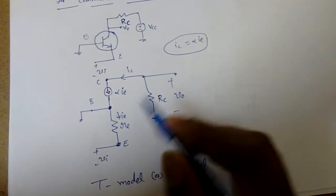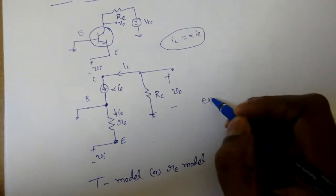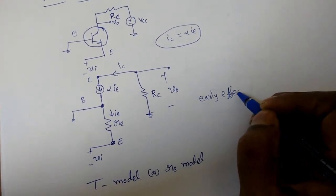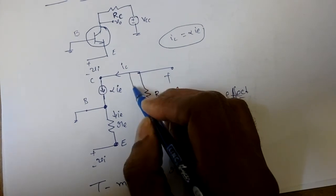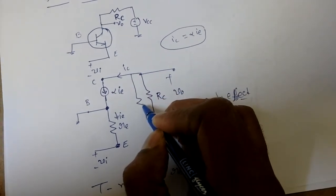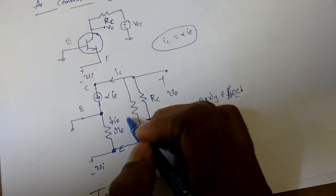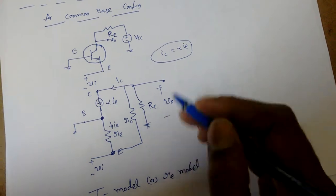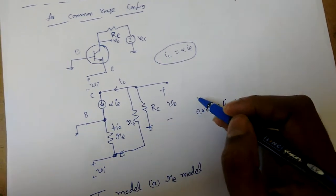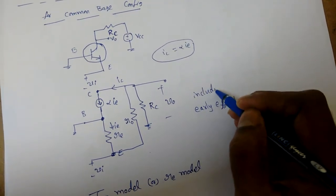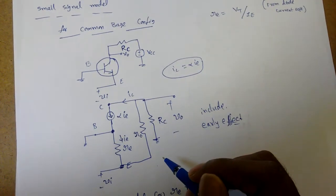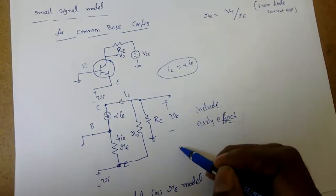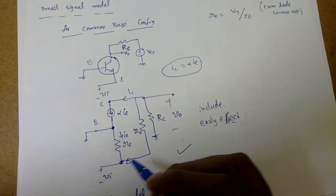In this T model, we have neglected the Early effect. If we include the Early effect, we need to include a small r_naught between the collector and emitter. This r_naught must be included when finding voltage gain and output impedance. That is about the T model or r_e model — when dealing with the common base configuration, the T model is the best model to find amplifier parameters.